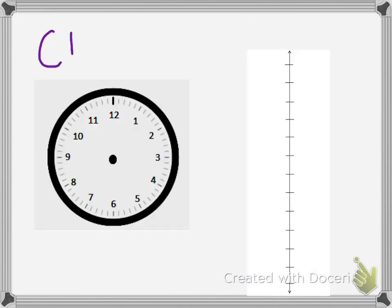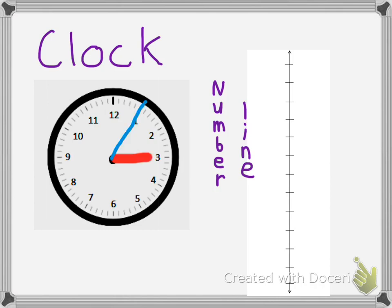First of all, we're going to look at two graphic organizers today. One of them is a clock, an analog clock, and the other one is a number line. On our clock, we have our hour hand and our minute hand. The hour hand is usually thicker and shorter, and our minute hand is usually skinnier and longer. Here we can see the hour hand is on the 3, and the minute hand is on the interval of 5 minutes. So it's 3:05.